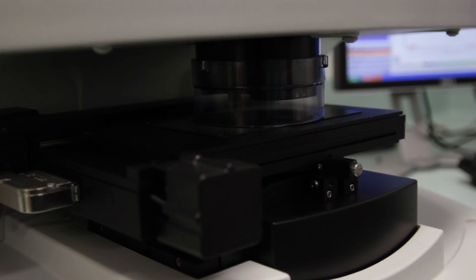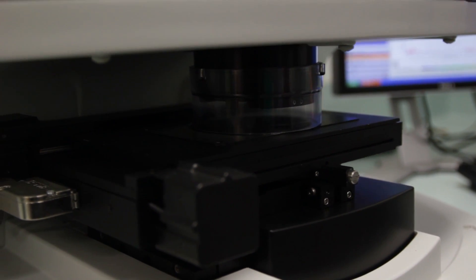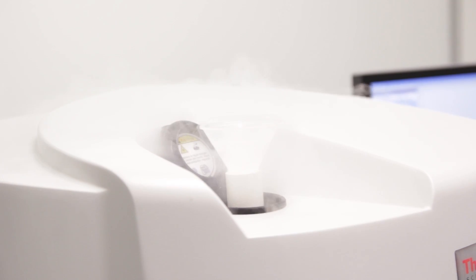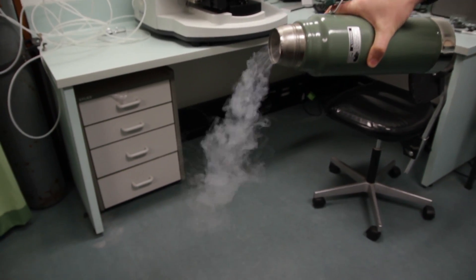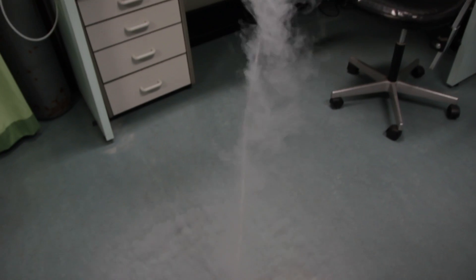So the most common impurity in natural diamonds is nitrogen. We can use this instrument, an infrared microscope, to analyze the nitrogen in a diamond. The reason we use liquid nitrogen is to basically cool the detector so we can get a very small signal.